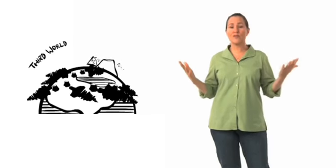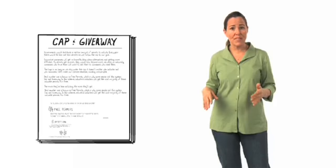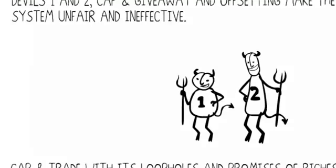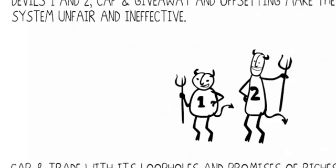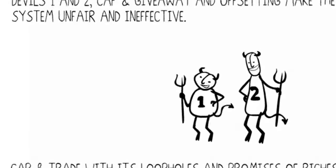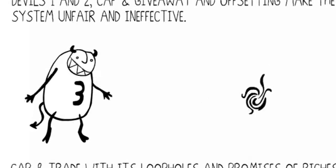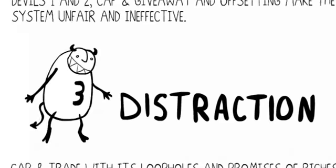The list of scams go on and on, and many of the worst ones happen in the so-called third world, where big business does whatever it wants to whomever it wants. And with lax standards and regulations on offsets, they can get permits for just about anything. Devils one and two, cap and giveaway and offsetting, make the system unfair and ineffective. But the last devil, which I call distraction, makes it downright dangerous.